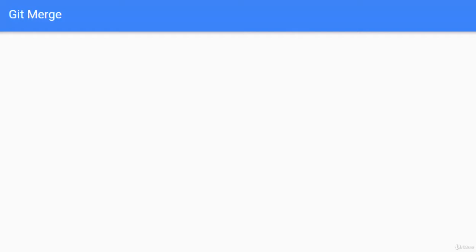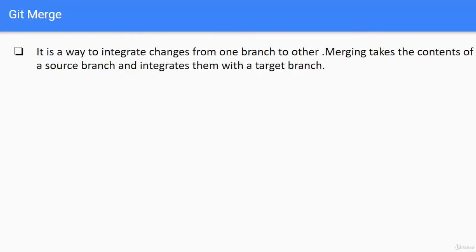In this lesson we are going to understand the basic concepts of git merge. There are different types of git merge — we will understand what those are and then using Eclipse we will perform those steps practically. To start with, what is git merge? It is a way to integrate changes from one branch to another. Merging takes the contents of a source branch and integrates them with a target branch.